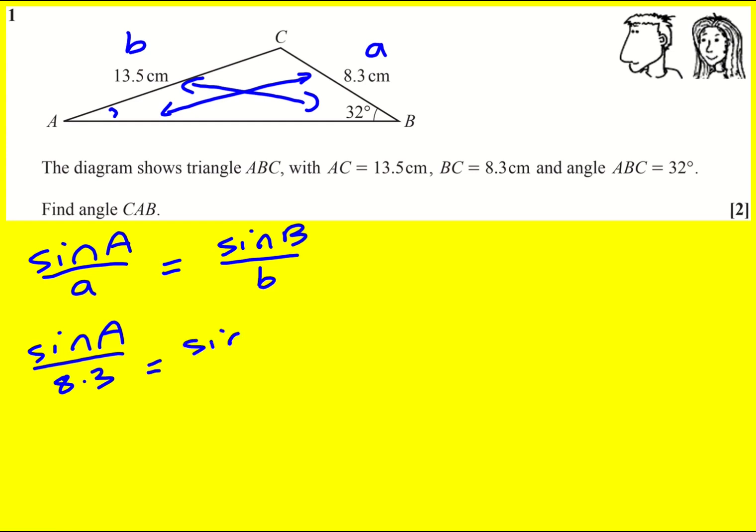So substituting in, we can multiply through by 8.3, which will give sine A.